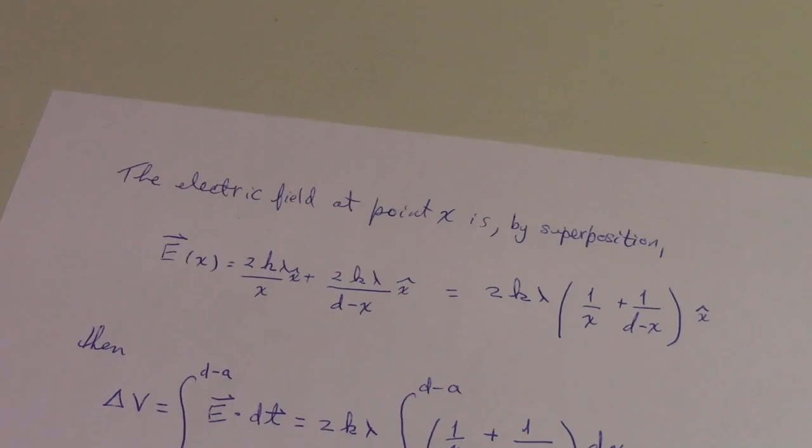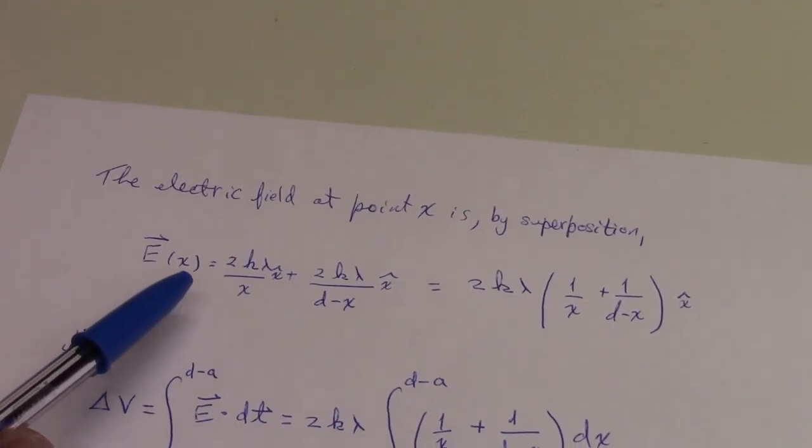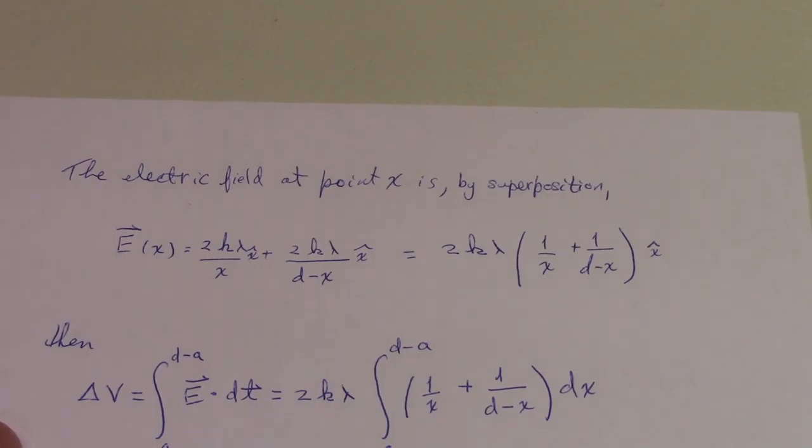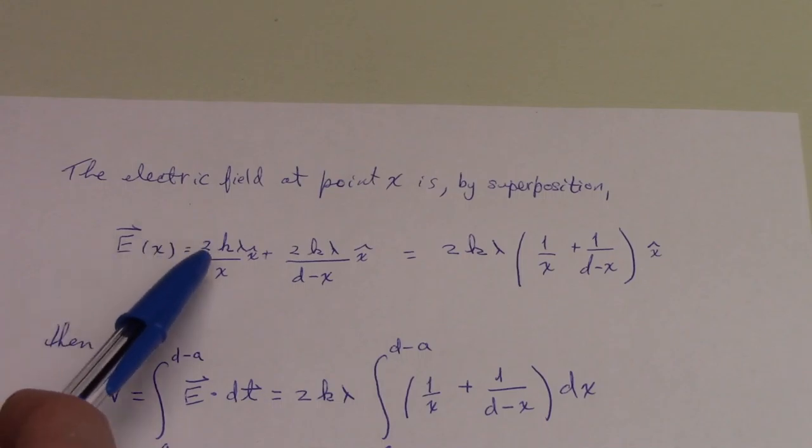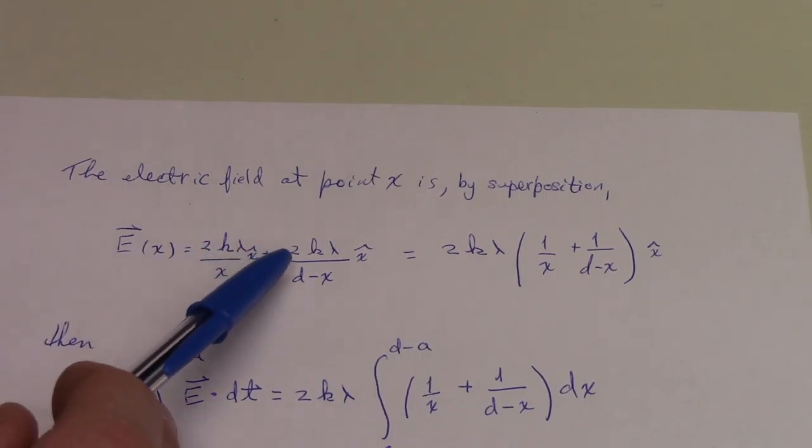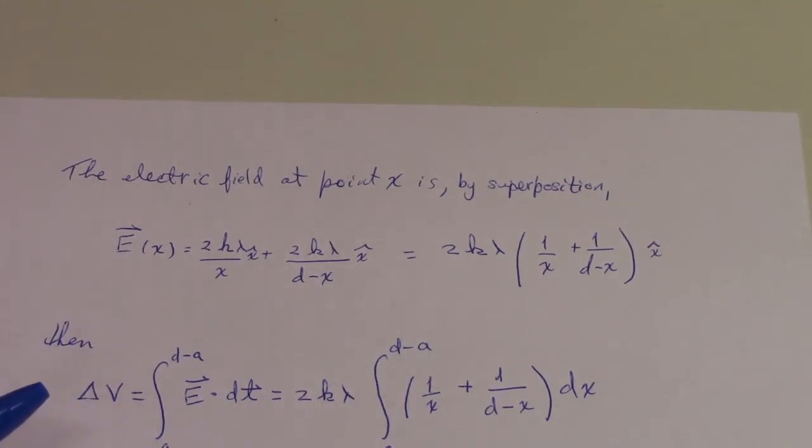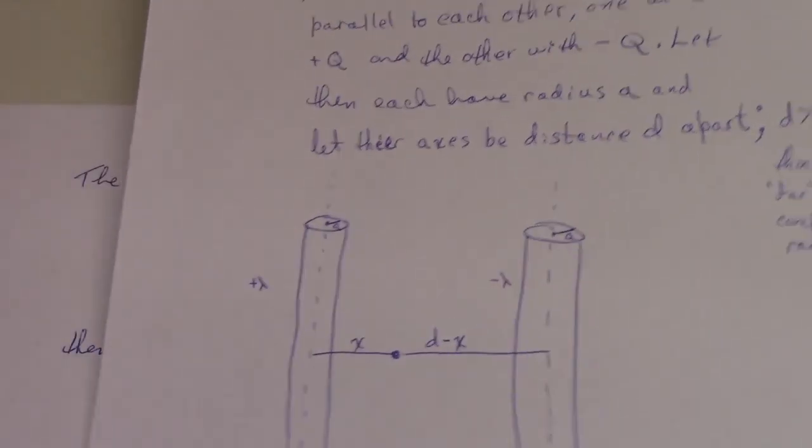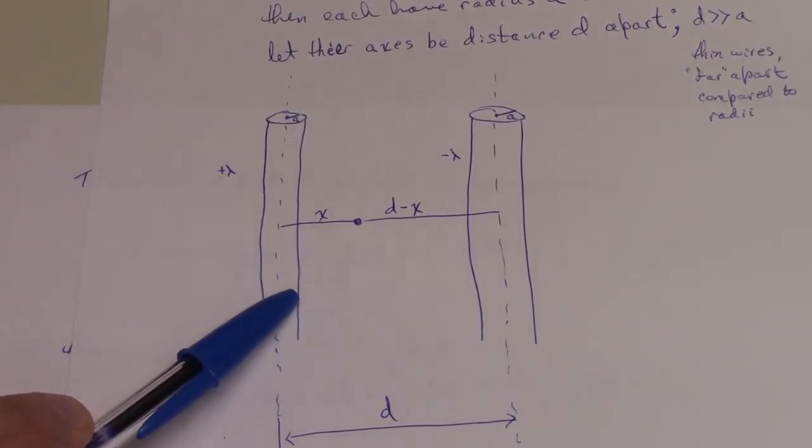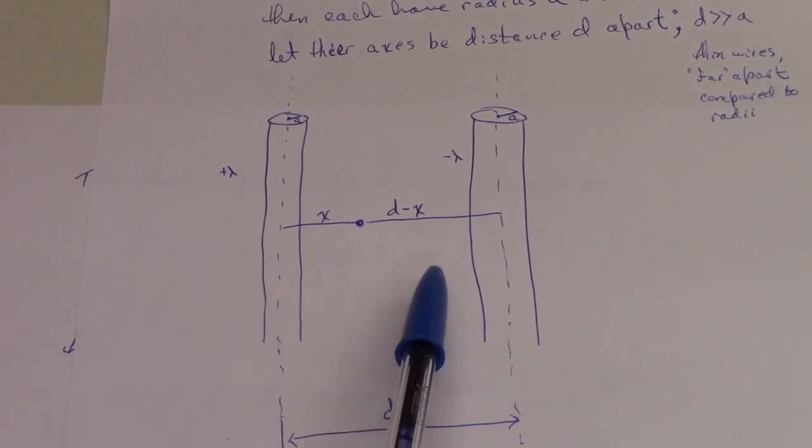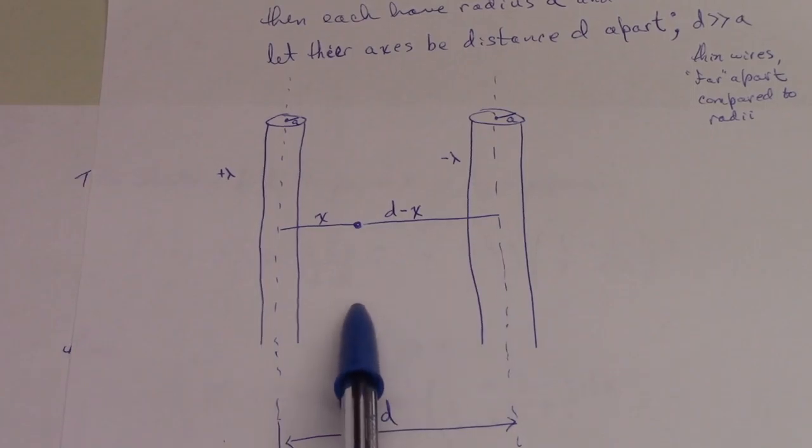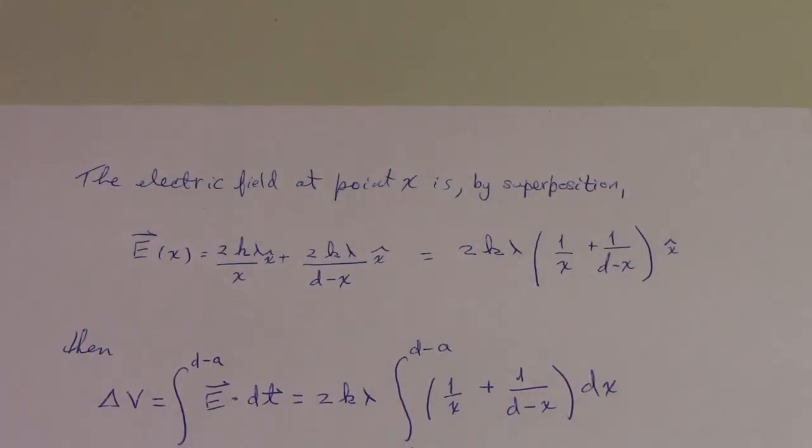Using the expression we calculated for the electric field, the field in between these two wires is just the superposition of the electric field due to any one of the wires. We have E at point x equals 2k lambda over x plus 2k lambda over d minus x. The vectors both point in the right-hand direction, because this is positively charged so the field points outward, and this is negatively charged so the field points inward in this direction.